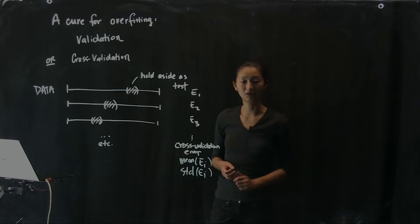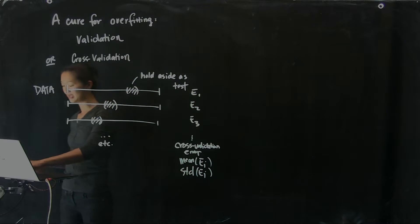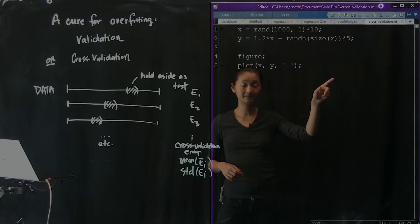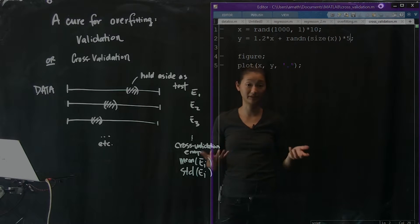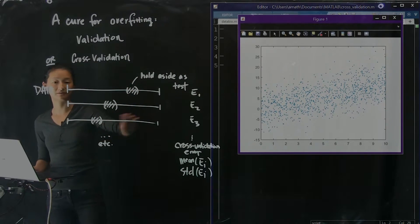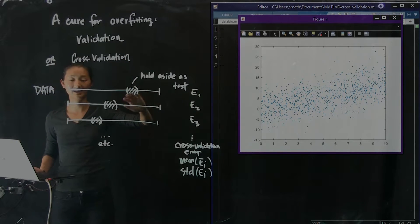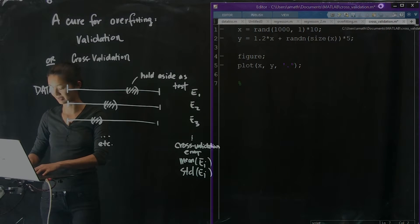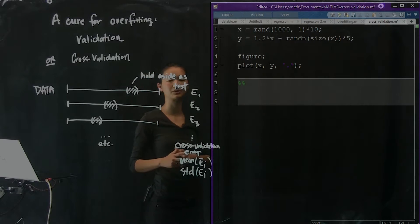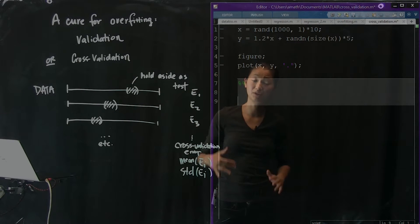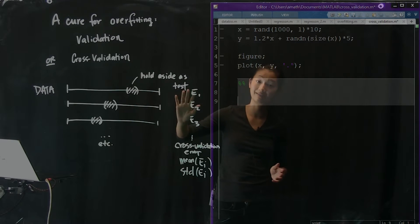Let's try this on some random fake data I've made up to show more explicitly how this is done. We have 1,000 data points where Y is a linear function of X: Y equals 1.2 times X plus some random Gaussian noise. Let's code one instance of holding aside a random subset, fitting the model on the remaining training data, and evaluating on the test data without ever touching the test data before the evaluation point — this is really important.